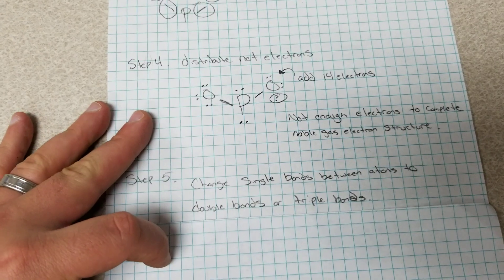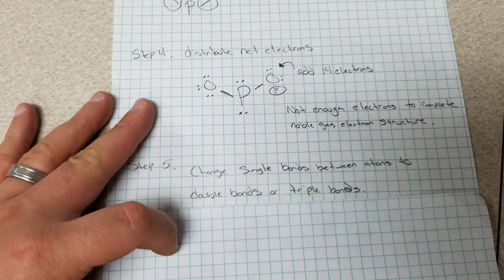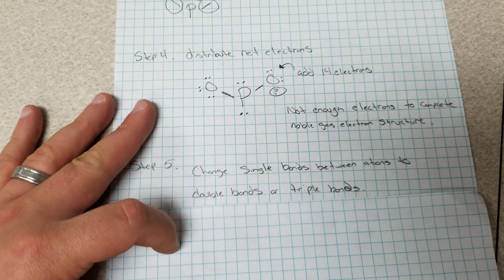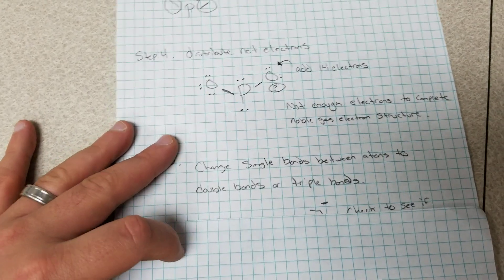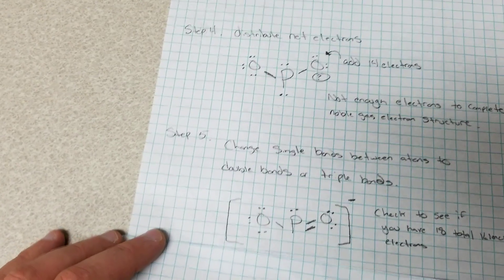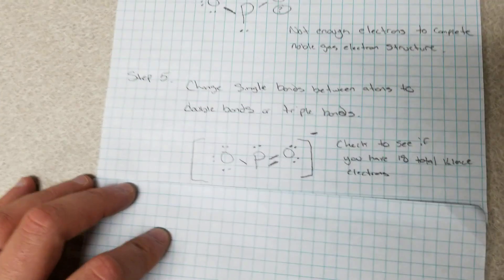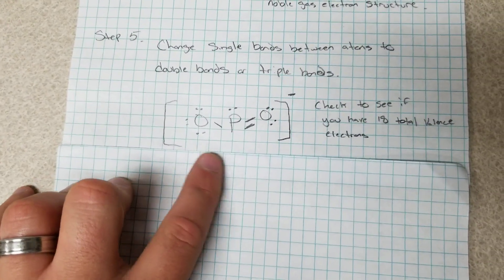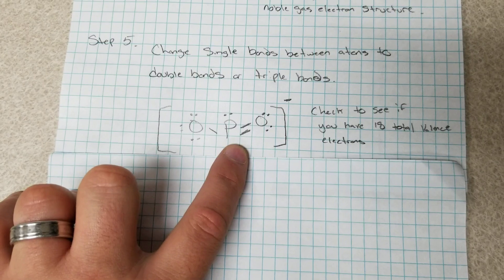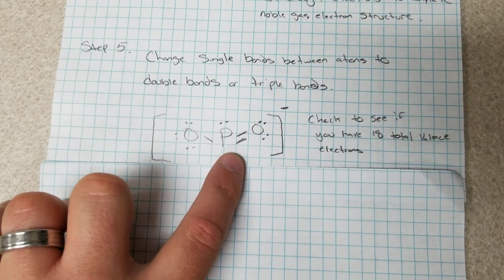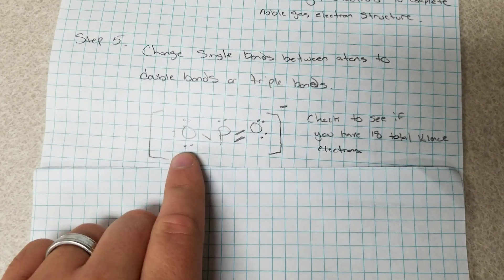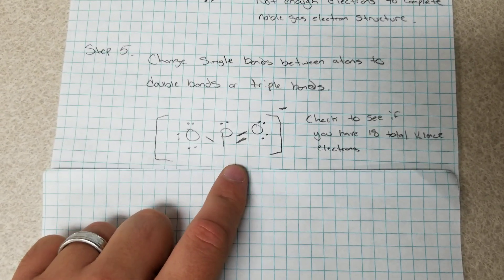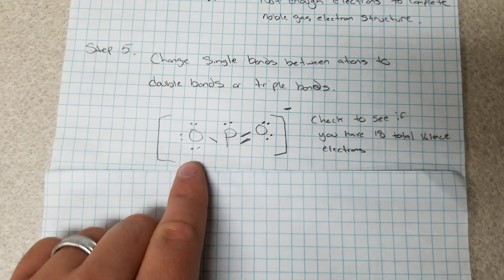So step five says that we need to change our single bonds between the atoms to either double or triple bonds to try to make it complete, to try to get all of our 18 electrons on the structure. So you can see here that I changed one of the single bonds to a double bond and that seemed to have worked. So now each atom is complete, has a complete noble gas electron structure which is our ultimate objective.